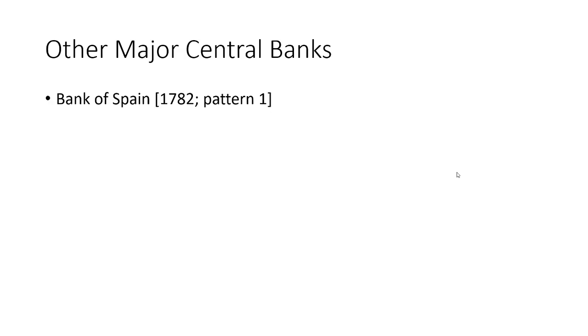Let me wrap up by addressing a couple of other major central banks — looking at the top ten by asset size. The Bank of Spain goes all the way back to 1782, pretty strictly a pattern one bank: created by the king of Spain to loan money to the government, gradually acquiring a monopoly of note issuance — similar to the Bank of England. The Bank of Japan was established in 1882 with the reforms that opened Japan to the rest of the world; it looks pretty much like a pattern one bank, created by the government with the government as its primary customer.